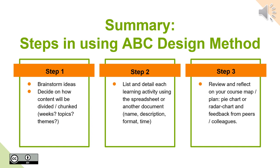To summarize, here are the steps in using the ABC design method. Step 1: Start off with brainstorming ideas in relation to the learning outcomes you have decided on. In some cases, you may have existing content which you need to decide how to divide up or chunk. Step 2: Start listing and detailing each activity item in terms of the learning type, the name of the activity, and the format. You can use a spreadsheet for this or make notes that you would later populate on the spreadsheet.